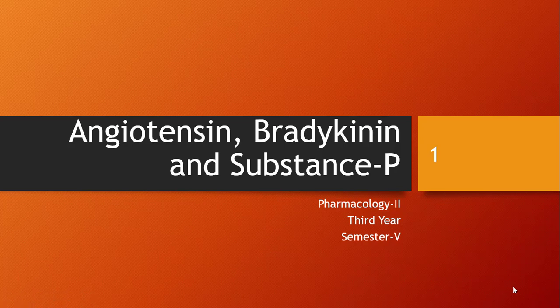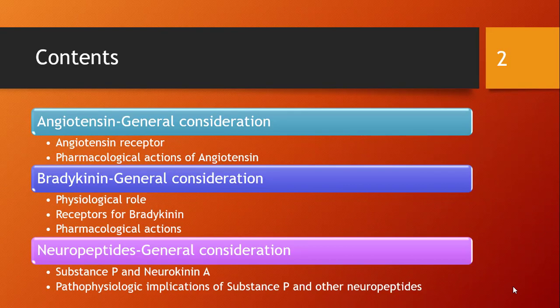Good morning everyone. We are going to start with a new topic under autacoids: angiotensin, bradykinin, and substance P. The lecture is divided into three parts — first, angiotensin; second, bradykinin; and third, neuropeptides, specifically substance P.